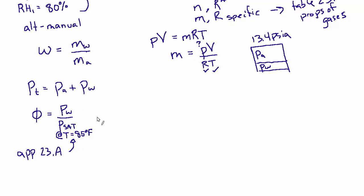So if we rearrange this for the partial pressure of water, it's going to be the relative humidity times PSAT at 85 degrees. And we know the relative humidity is 80%. So 0.8. And when I look up this value in the steam table, it's 0.5969 PSIA. So if we calculate that, the partial pressure of water vapor in this particular case is 0.477.